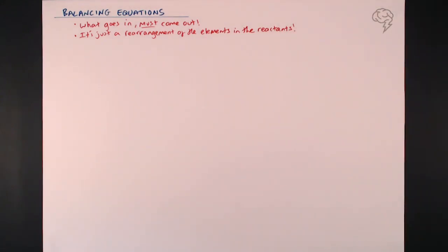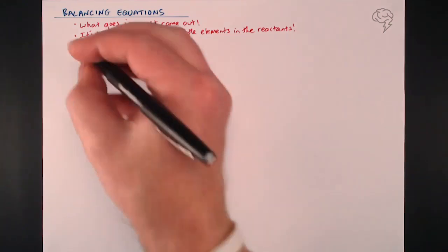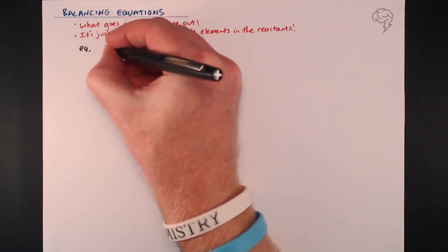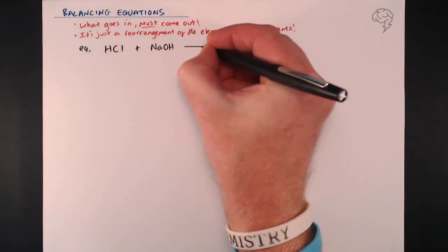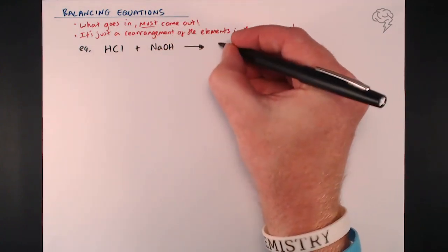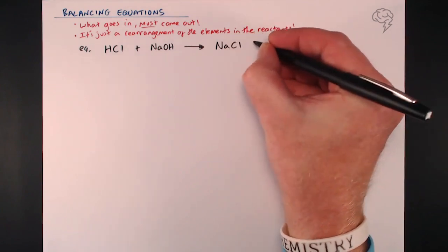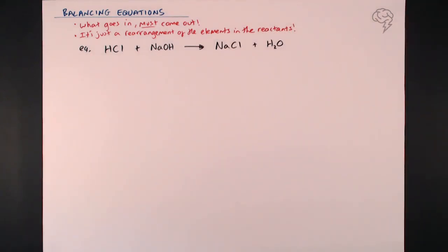Here's a simple equation that you will have seen before - it's a neutralization reaction between hydrochloric acid HCl and sodium hydroxide NaOH to form a salt and water: NaCl and H2O.